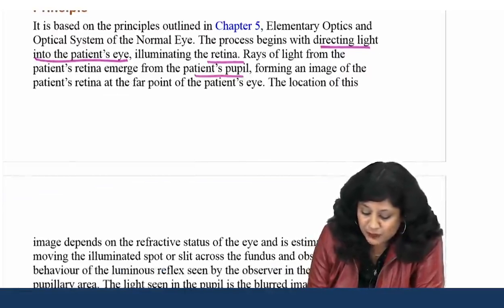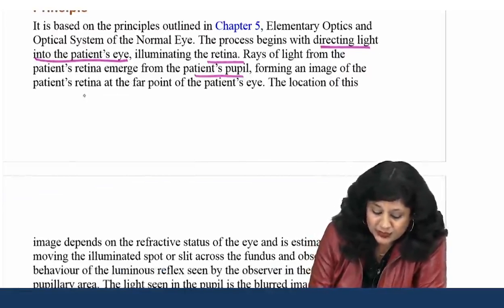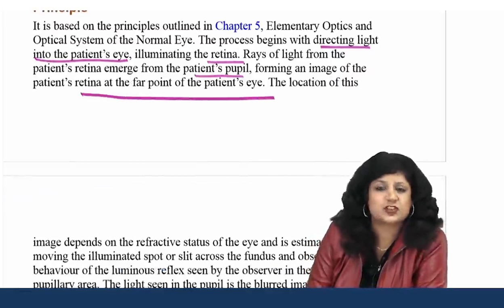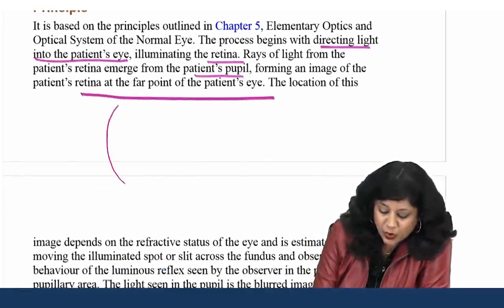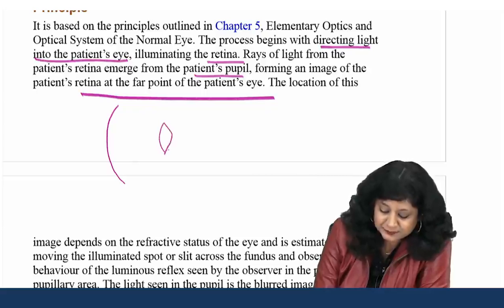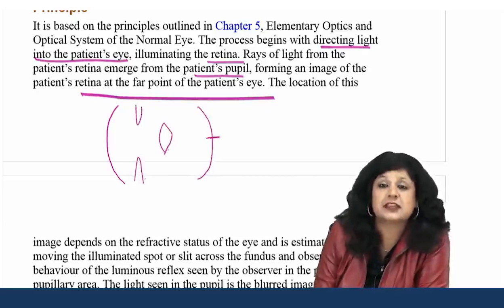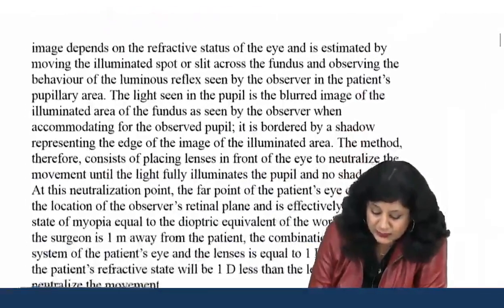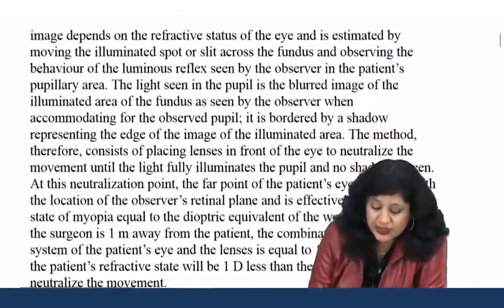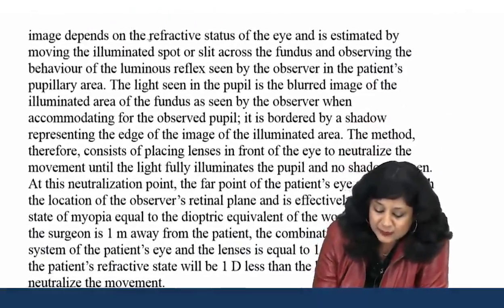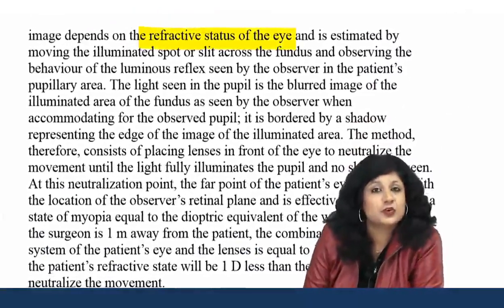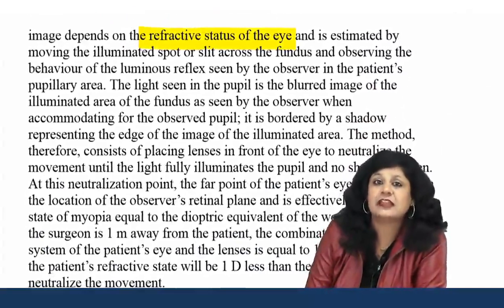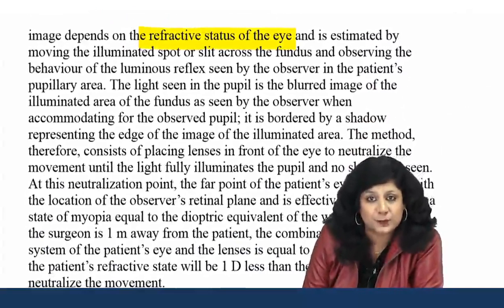First, they have started with retinoscopy. The theory of retinoscopy: retinoscopy is also called skiascopy or the shadow test. This is the practical method of estimating the condition of refraction. Whenever they use all three of these words — retinoscopy, skiascopy, or shadow test — the meaning remains the same.